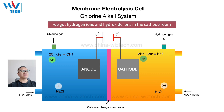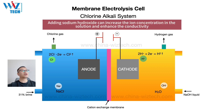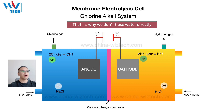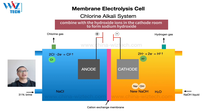You may ask: we have hydrogen ions and hydroxide ions in the cathode room, so why do we use sodium hydroxide liquid instead of water? Adding sodium hydroxide can increase the ion concentration in the solution and enhance conductivity — that's why we don't use water directly. The sodium ions in the anode room will pass through the ion exchange membrane and combine with the hydroxide ions in the cathode room to form sodium hydroxide.